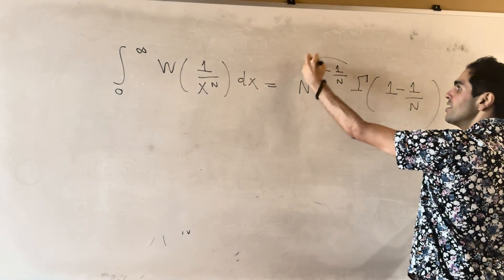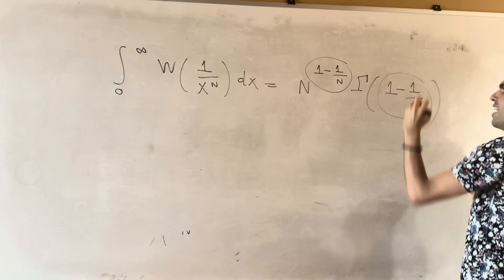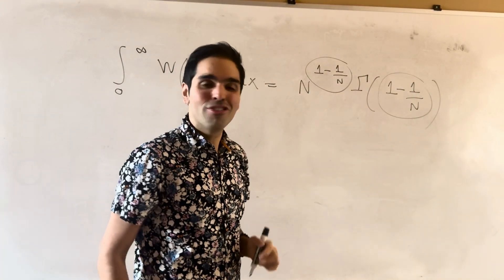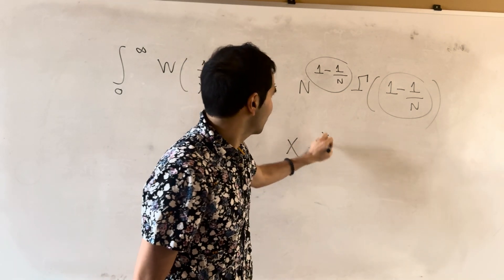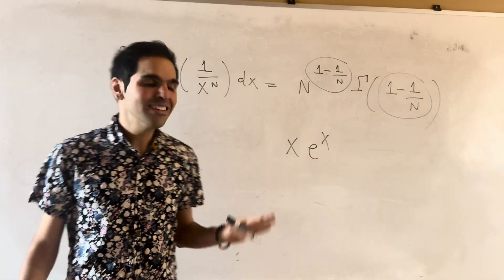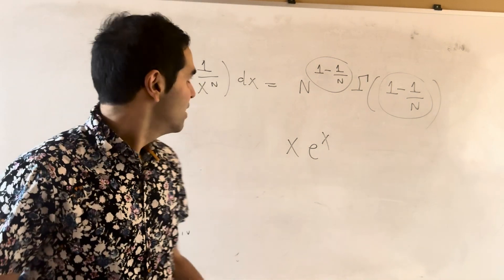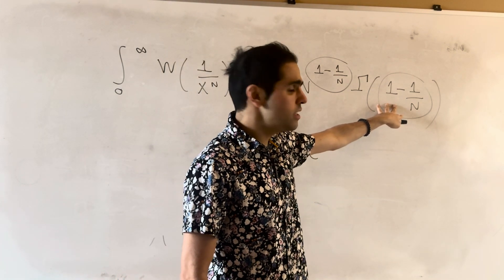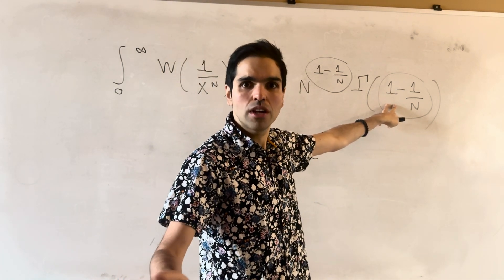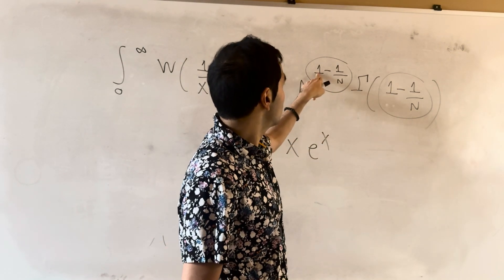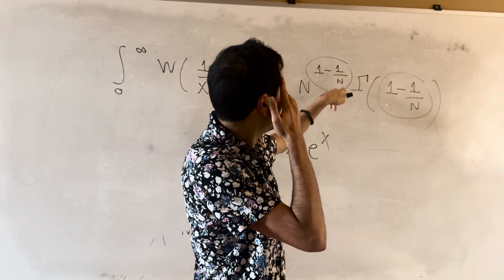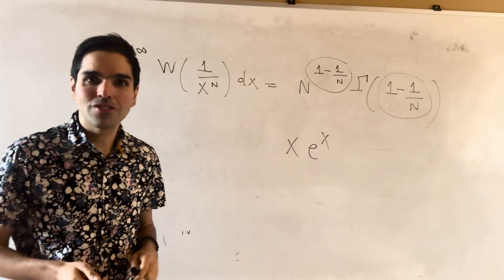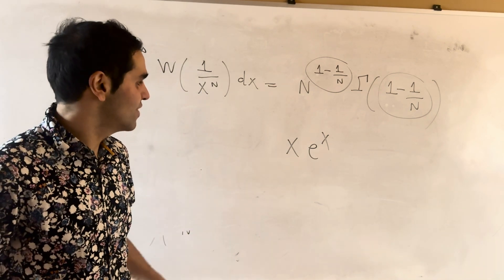How beautiful is that? Not only do we have this common factor of (1 − 1/n), but the structure n^(1−1/n)·Γ(1 − 1/n) is reminiscent of x·eˣ — a nice symmetry. By the way, as n → ∞, Γ(1 − 1/n) → Γ(1) = 1 and n^(−1/n) → 1, so this integral actually goes to infinity, which is very neat.